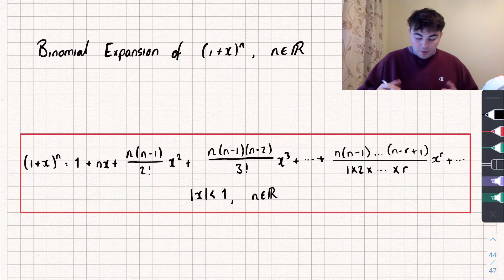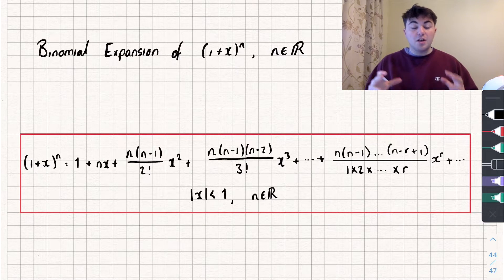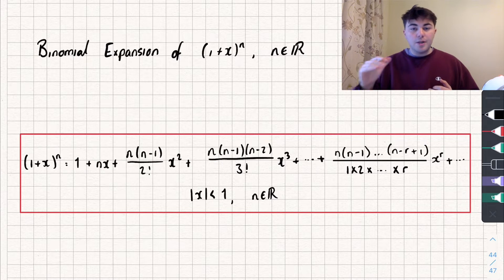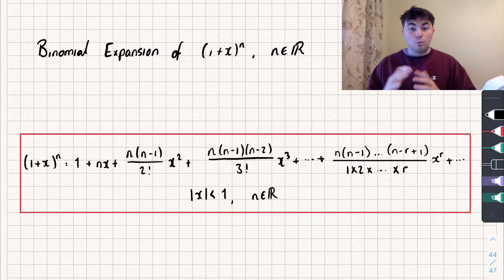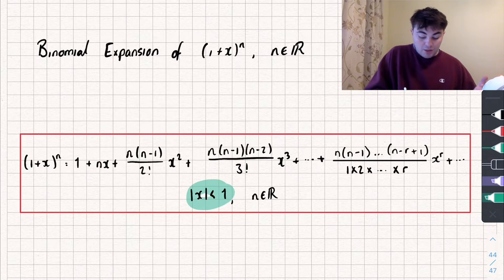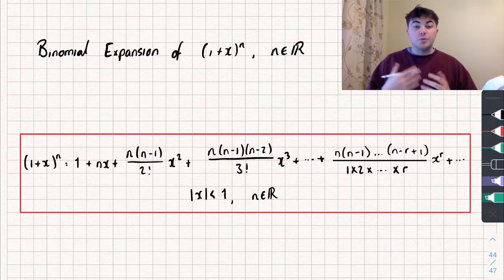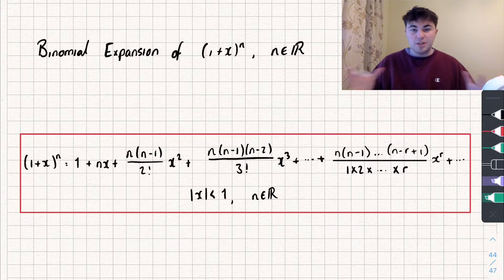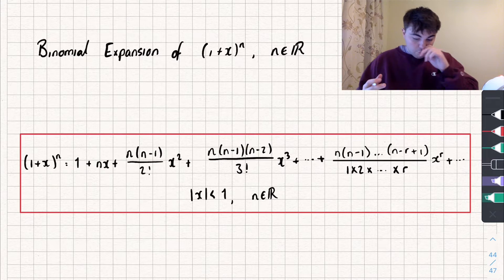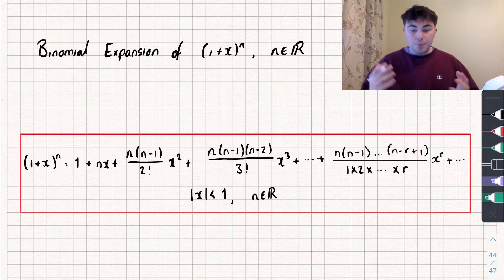I've written the formula for this in the red box, and that's the first thing we're going to look at. I'll timestamp each different part of the video, so if you're not interested in the explanation as to why this works — or why the value of x has to be less than 1 — you can skip ahead to an example that will demonstrate how to use it. The formula looks a bit tricky but it's actually really easy.